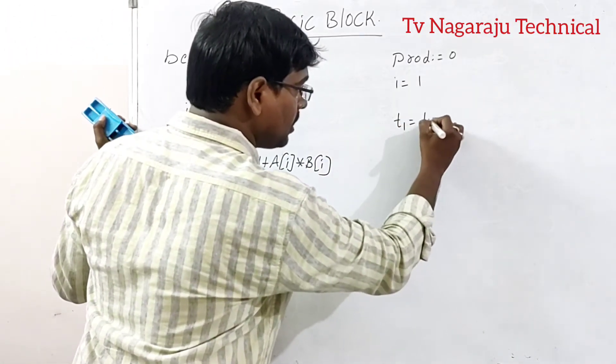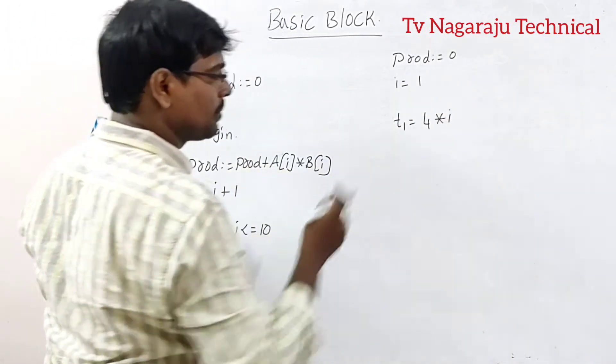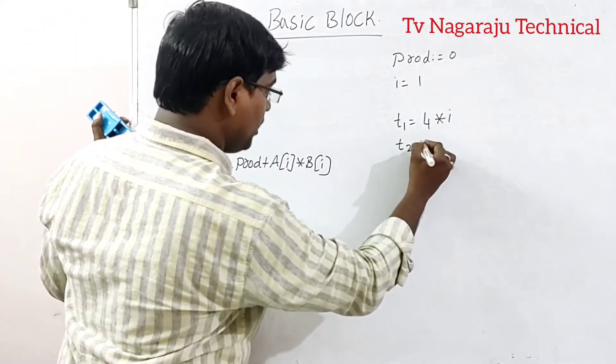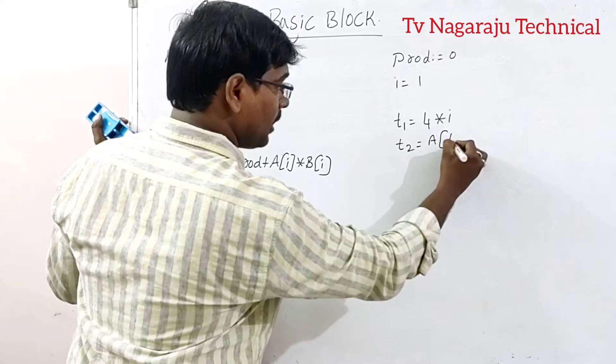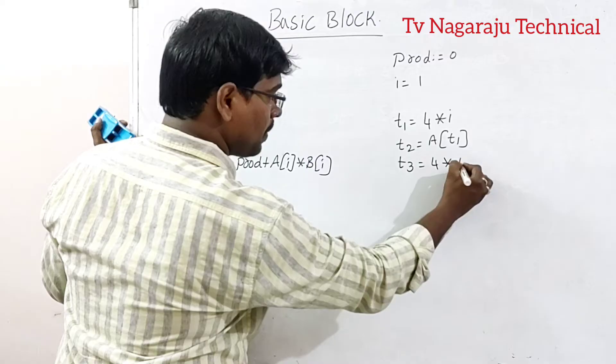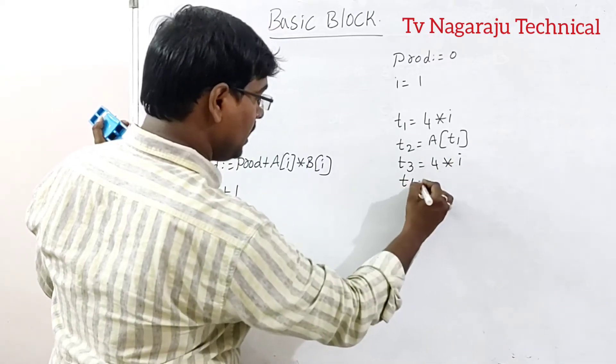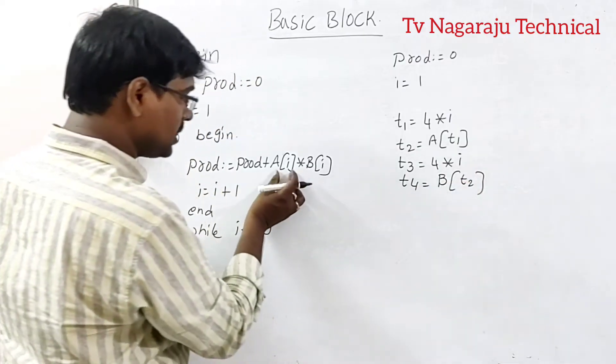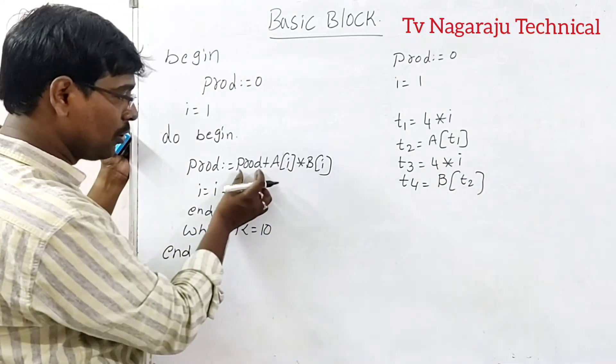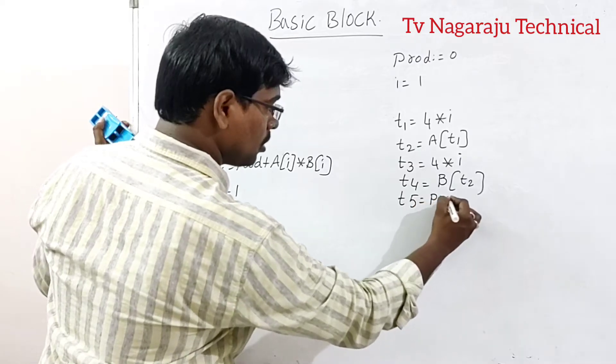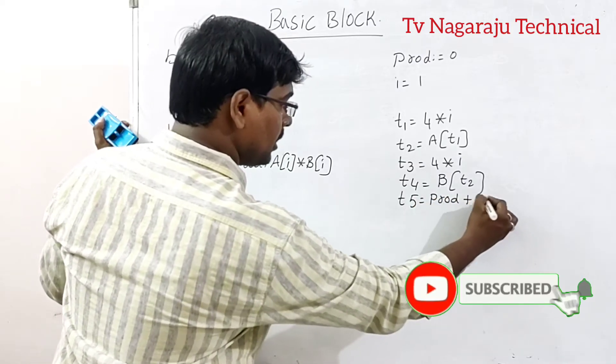After that, for example, T1 is equal to 4 times i. T2 is equal to A of T1. T3 is equal to some multiply with the constant. T4 is equal to B of T2. This is completed. Now perform addition. T5 is equal to product plus T4.